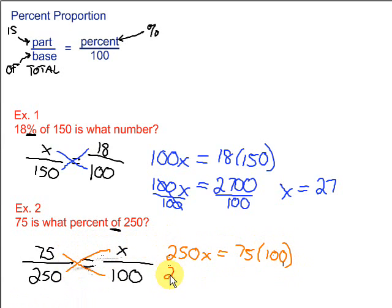Simplify. 250x equals 75 times 100 is 7500. To solve this equation for x, we want to get rid of that times 250. To do that, we divide by 250 on both sides of our equation. Divide by 250. This cancels out.